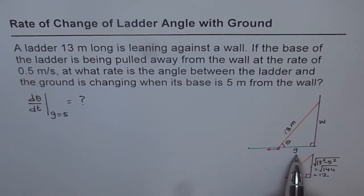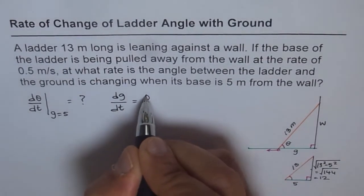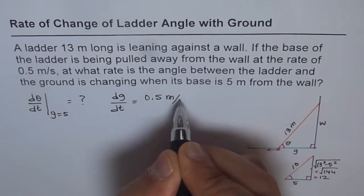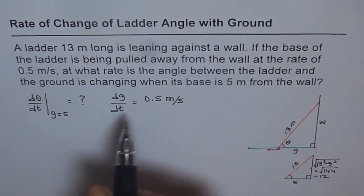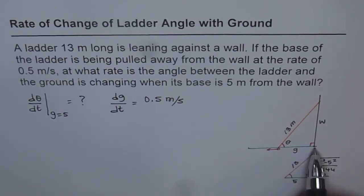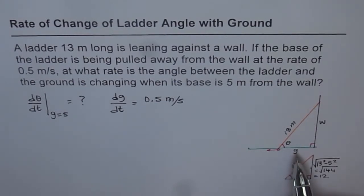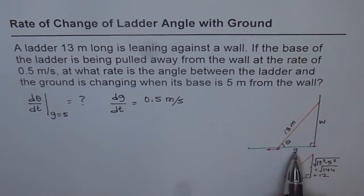I have defined variable g along the horizontal ground axis. So we have dg/dt given as 0.5 meters per second, or you can write half meters per second. Since we need to find the rate of change of this angle when distance is 5, we want to find a relation between the two. Once we have a relation, we can easily solve the question. One way is to see how g and θ are related — we can see g, θ, and 13 are related with cosine theta.